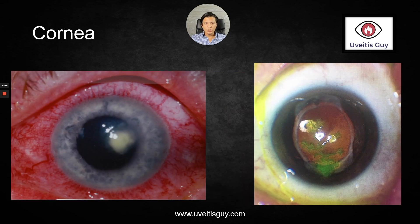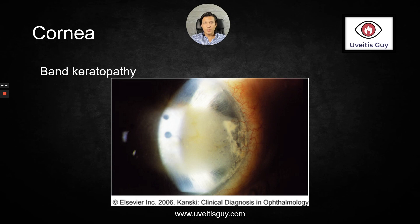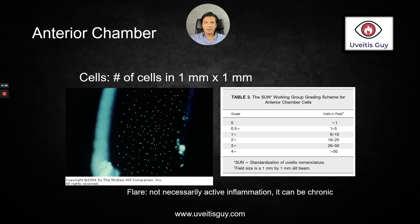Always check the cornea. Sometimes patients will have lesions that are not visible, but if you put some stain in, you'll be able to see them. In the cornea, you can also see keratic precipitates and band keratopathy, usually seen in patients with chronic uveitis.